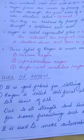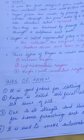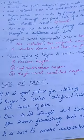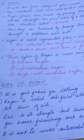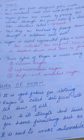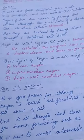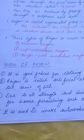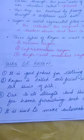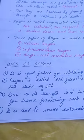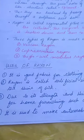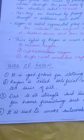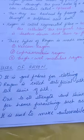Now we will discuss the uses of Rayon. Firstly, Rayon is soft, comfortable to wear, and absorbent like cotton, so it is used as a good fabric for clothing. Rayon is also called artificial silk — it has the shine of silk and drapes like silk, but it is much cheaper, making it a good fabric for fashionable garments.